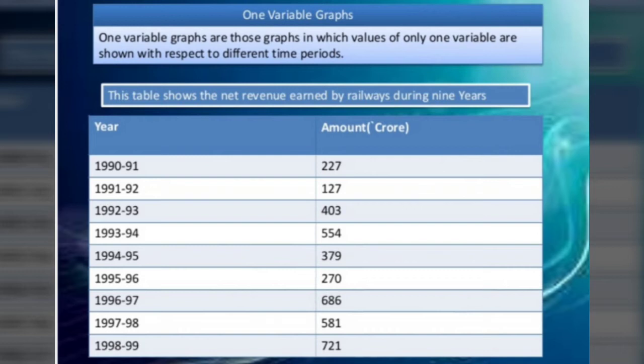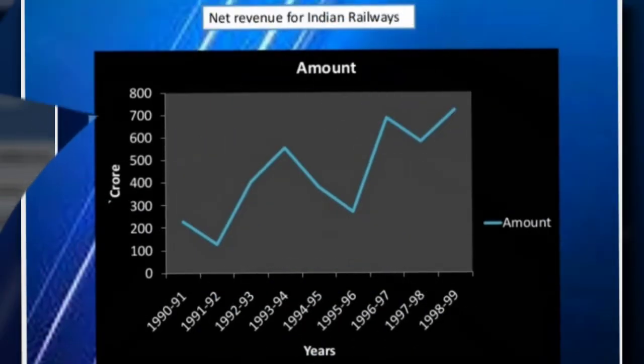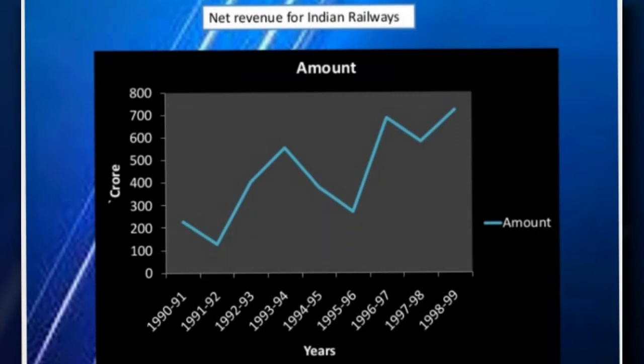Now one variable graphs are those graphs in which values of only one variable are shown. As you can see in this table, the net revenue earned by railways during 9 years is like this. Now we have to change the format of the graphs that is going from slant starting from 227 and then slant downwards and then begin with the upwards. The view line shows the net revenue for Indian railways.